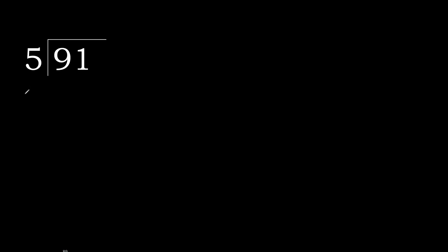91 divided by 5. Starting with 9: 5 multiplied by which number is nearest to 9 but not greater? 5 multiplied by 2 is 10, which is greater. 5 multiplied by 1 is 5, which is not greater. So 1 goes here. 9 minus 5 is 4.